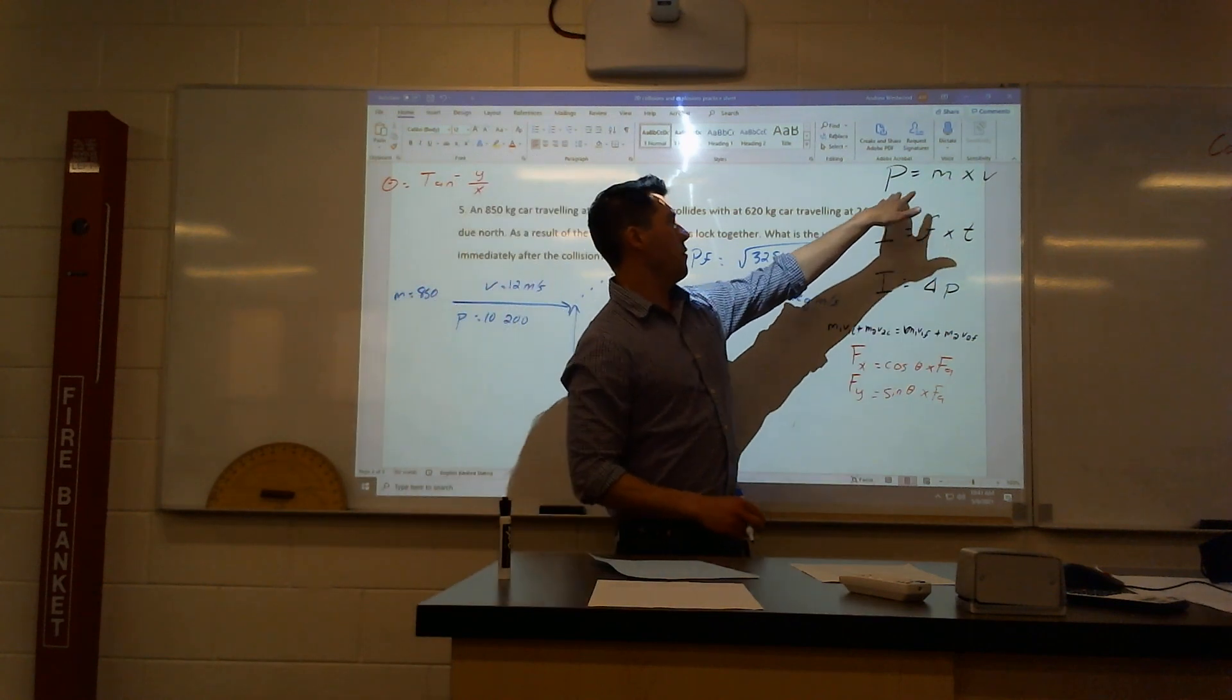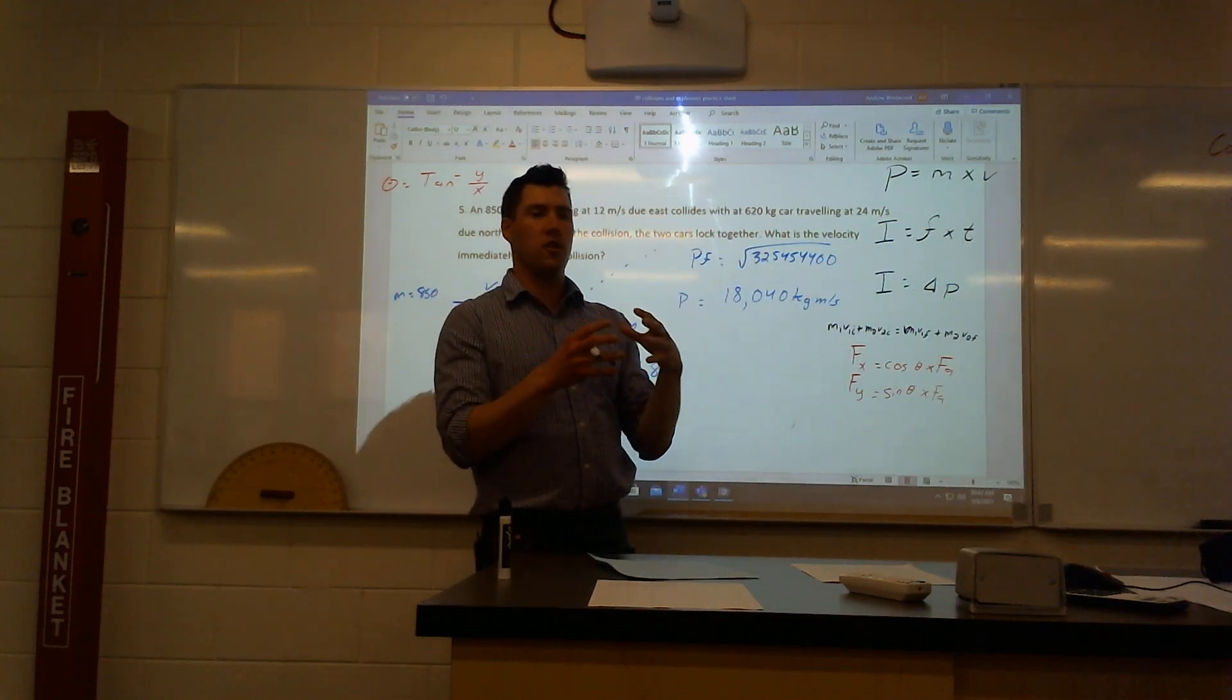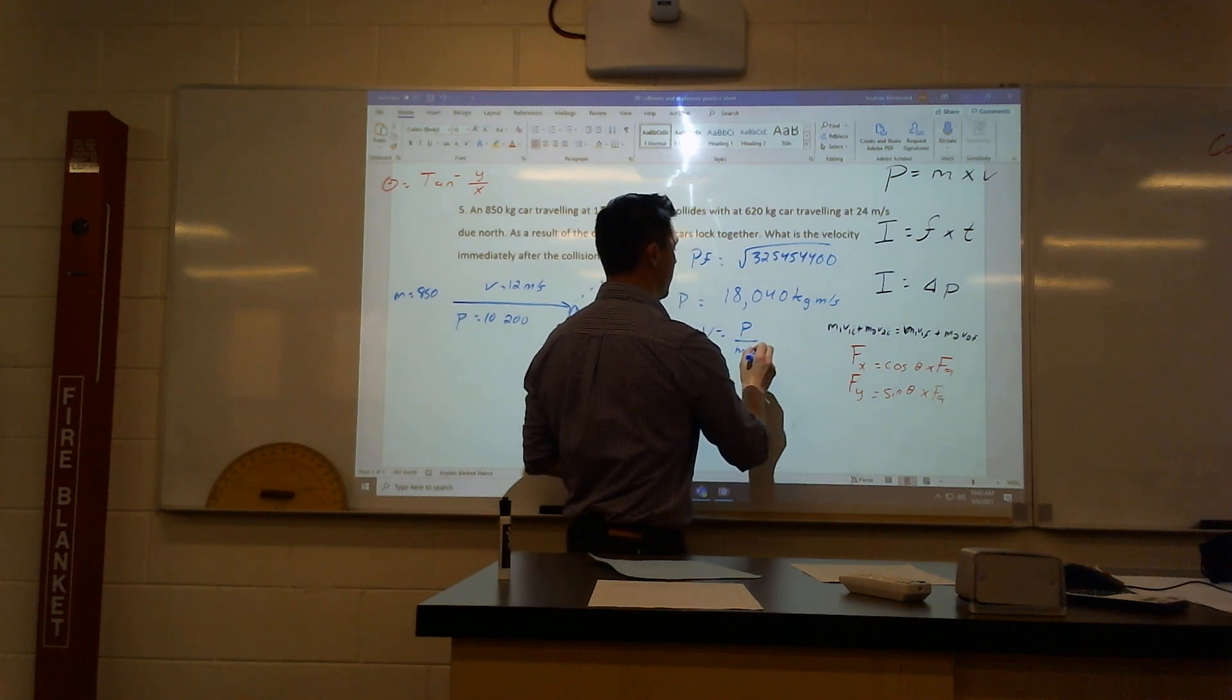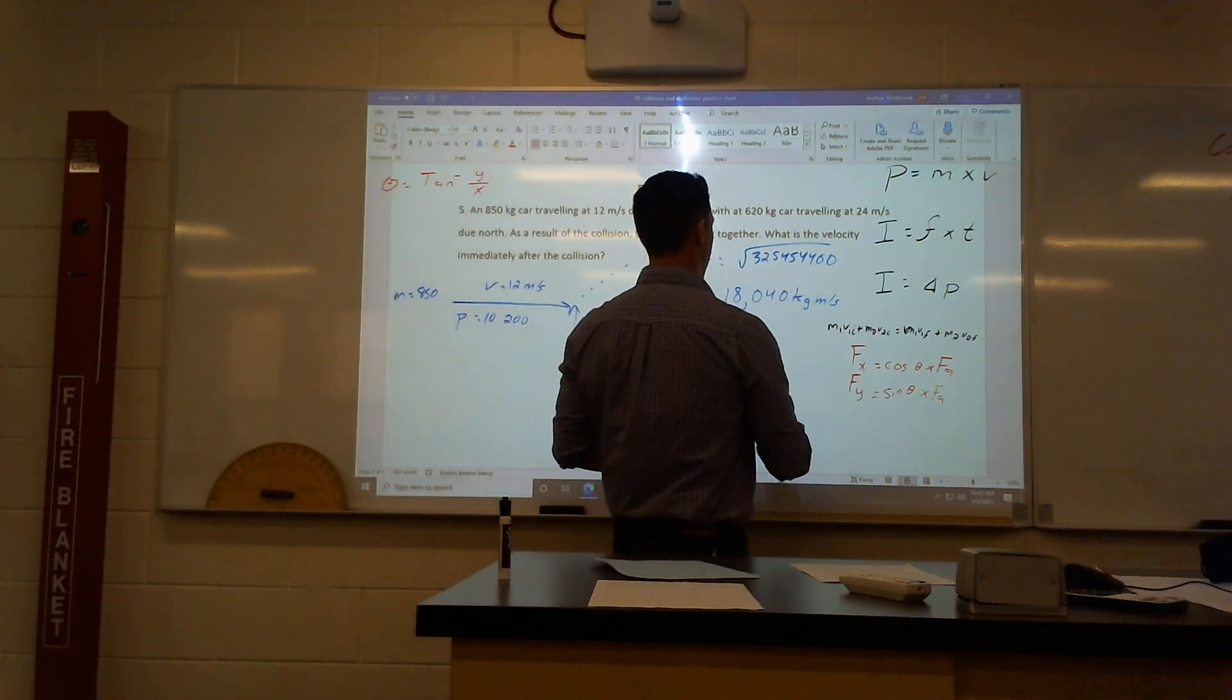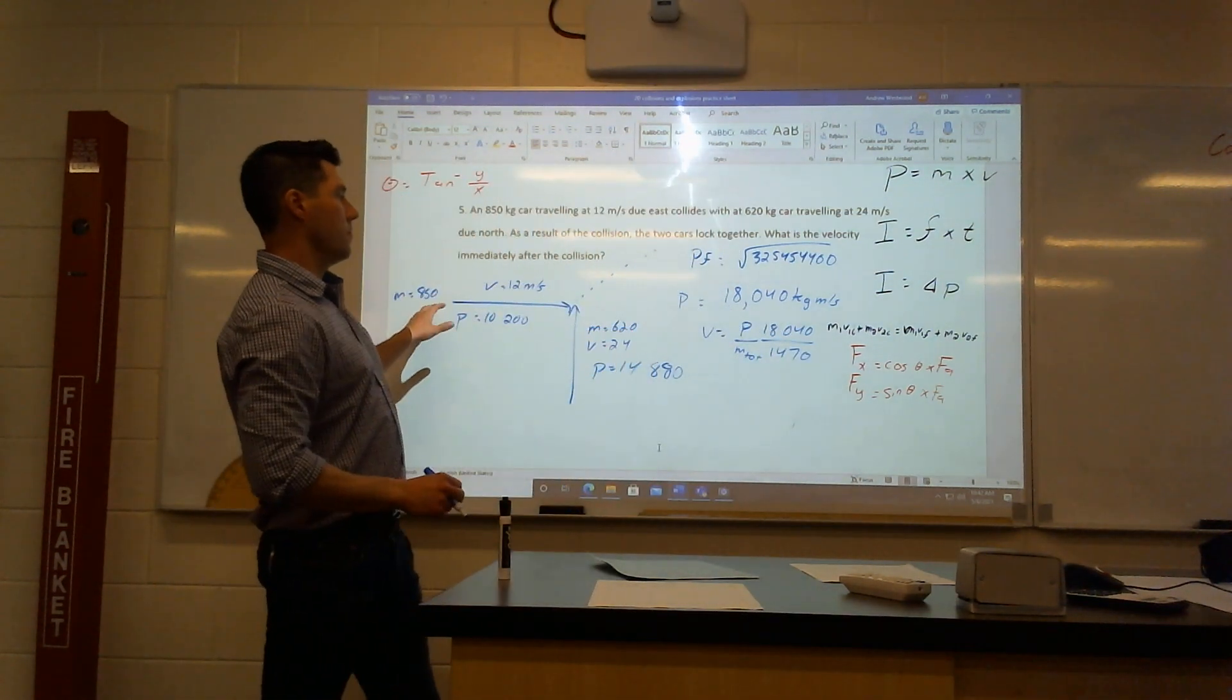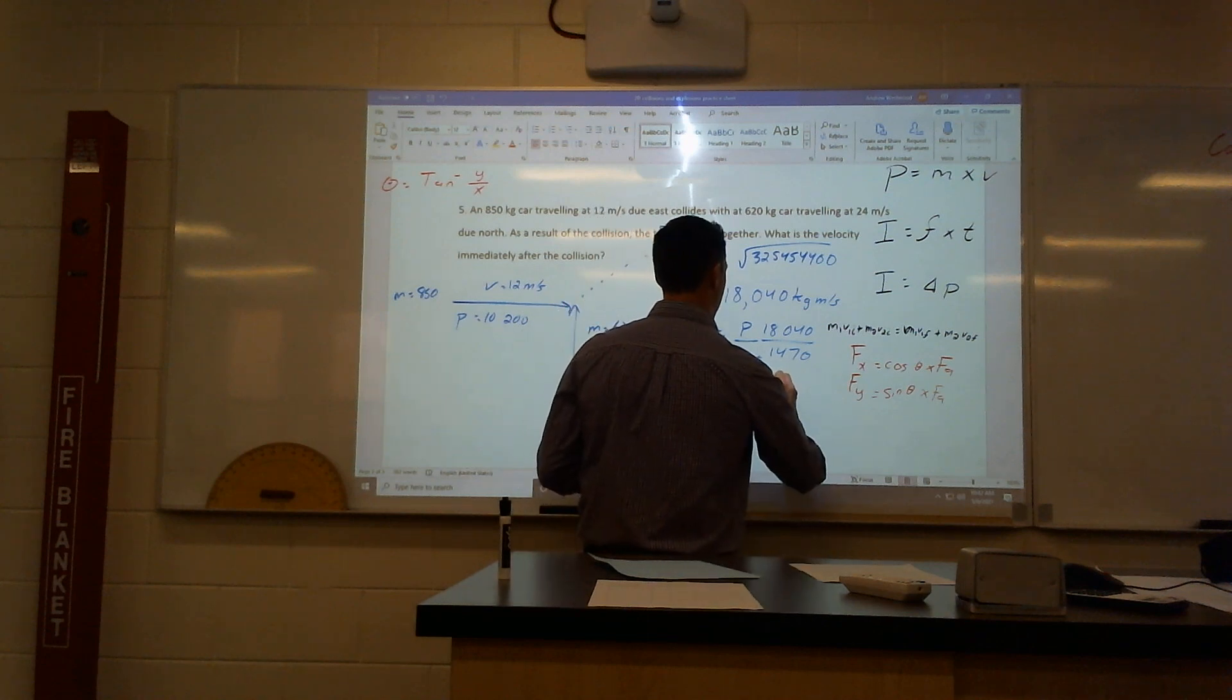It asks here, what is the velocity after the collision? We have momentum, so we have some masses, we need to find the velocity. When things stick together, to get velocity, all we have to do is go our momentum over our mass total. So it's going to be this 18,040 over 1,470, which is just the 620 plus the 850. I get a velocity of 12.3 meters per second.